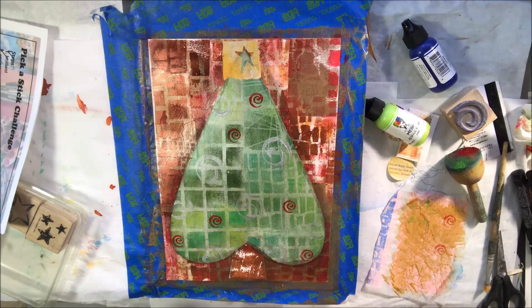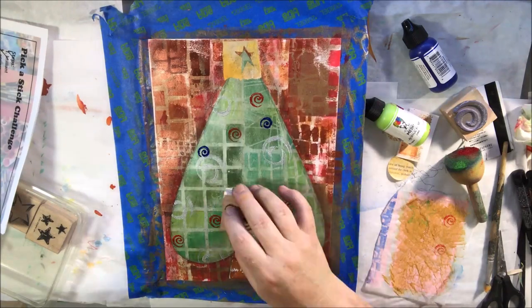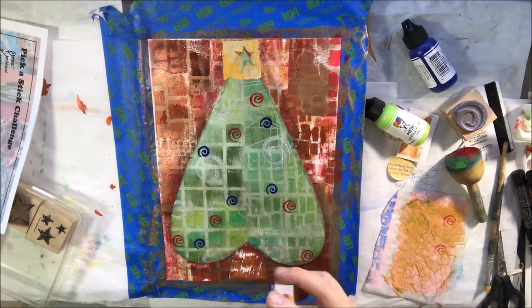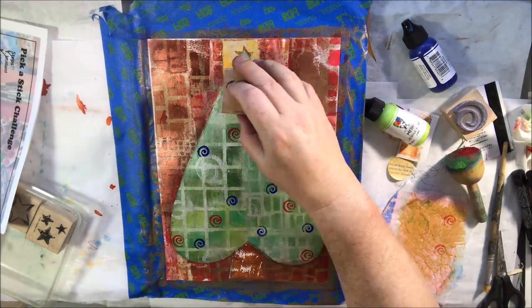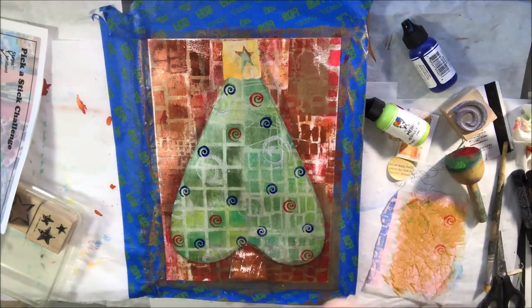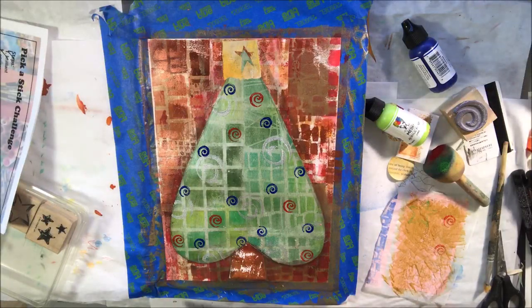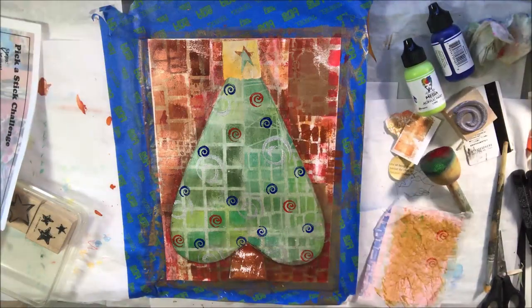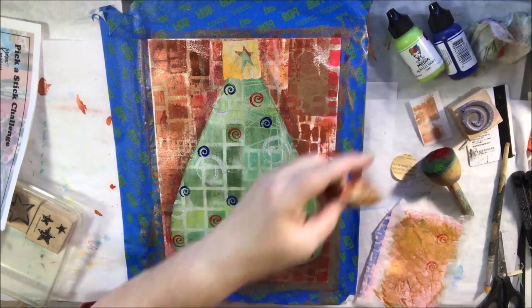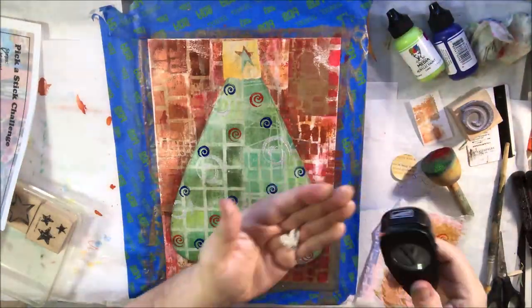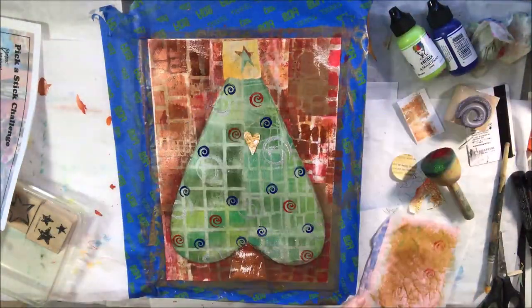Just remember to get the acrylic paint off the stamp before it's dried because it will stick there and be really hard to remove if you don't clean it off promptly. I'm just wiping it off with a baby wipe and that's all good.